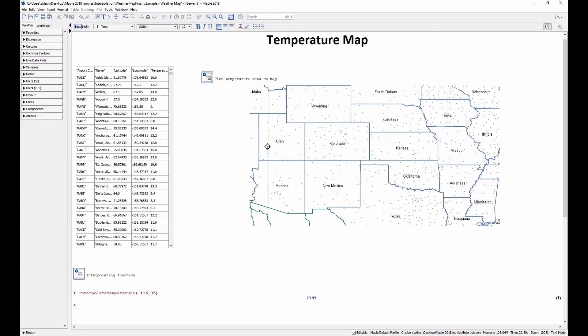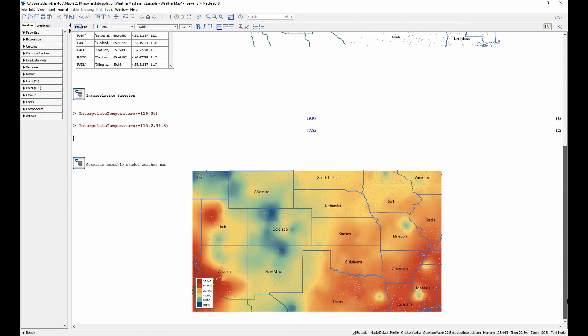Here we visualize the data with Maple's mapping tools. We've also generated an interpolating function that predicts the temperature at any longitude and latitude. This function is then used to generate a smoothly shaded temperature map.